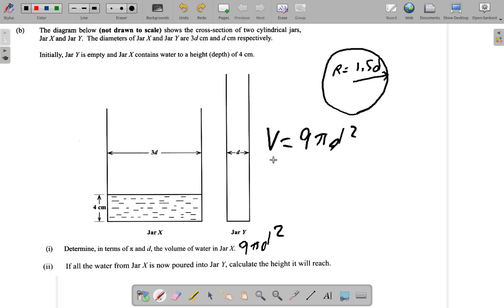The volume will remain the same, but the diameter and therefore the radius actually drop. So what's the radius of jar y? It is d over 2, half of the diameter.